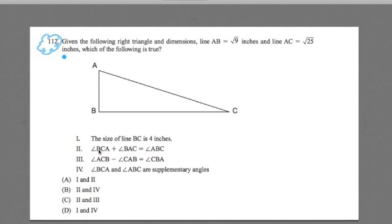Statement 2: Angle BCA plus angle BAC equals angle ABC. Statement 3: Angle ACB minus angle CAB equals angle CBA. And number 4: Angle BCA plus angle ABC are supplementary angles. Two of these statements are true, two of them are false.